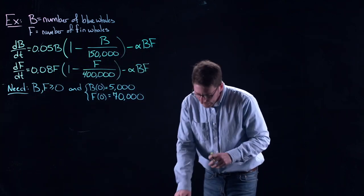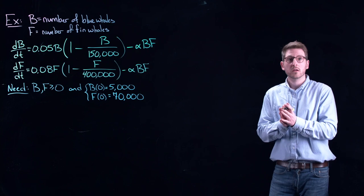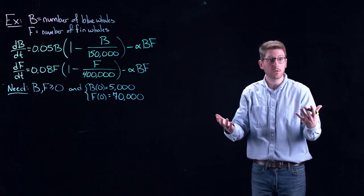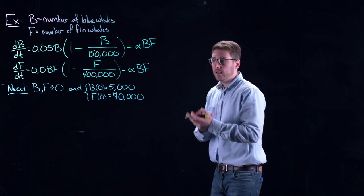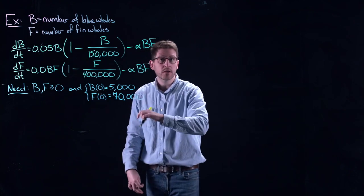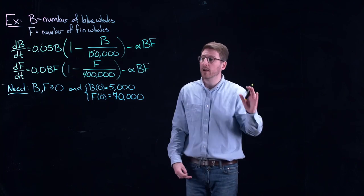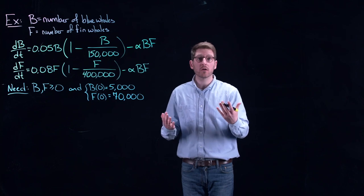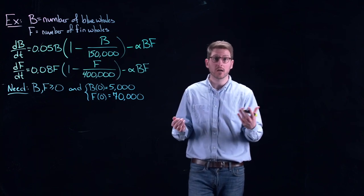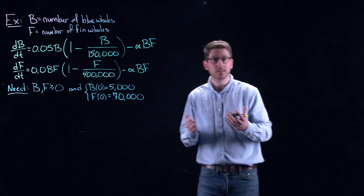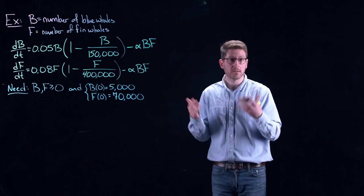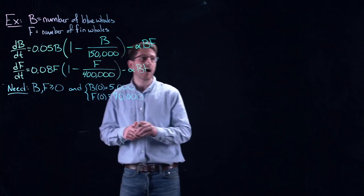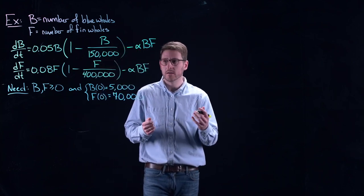And we can imagine that maybe that's due to whaling. So the question we can ask ourselves from a math modeling perspective, do we expect the whale populations to go extinct? Similar to what we saw with the hardwood and the softwood example. Will they die out? If we stop all of the whaling right now, will these populations die out? Or are they going to potentially persist up to maybe some equilibrium state, some point of balance. Then the question is, how do we do this? How do we understand this?